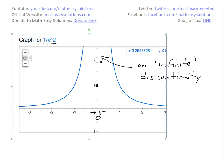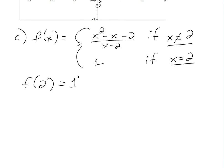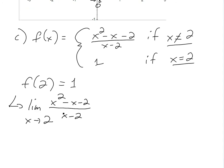Example (c): f(x) = (x²-x-2)/(x-2) if x≠2, and f(2)=1. This is the same expression as Example (a) except we've redefined f(2)=1. Now f(2) is defined and equals 1. We need to check whether the limit as x approaches 2 equals f(2).